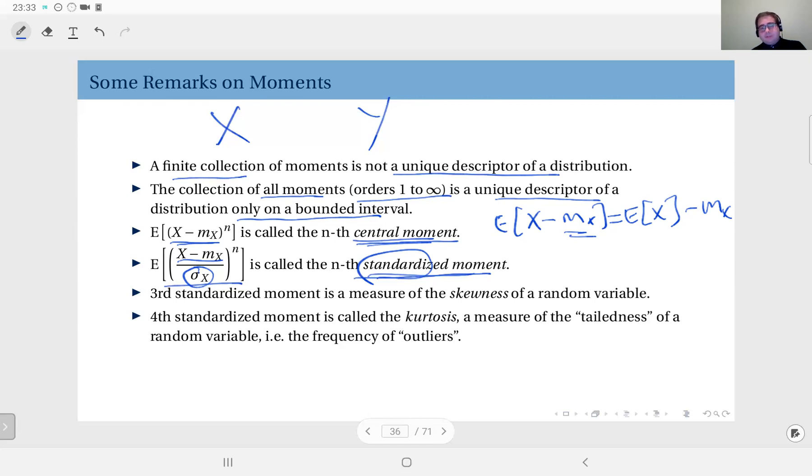And what about further statistics, higher order statistics? I'm going to give you just two. The third standardized moment is a measure of skewness. What does skewness mean?